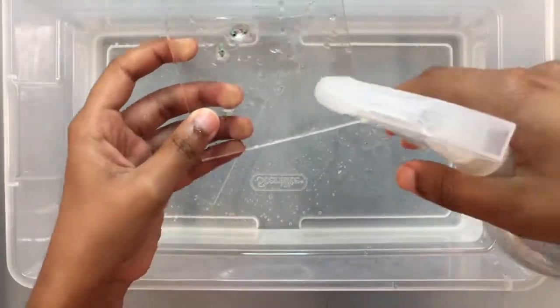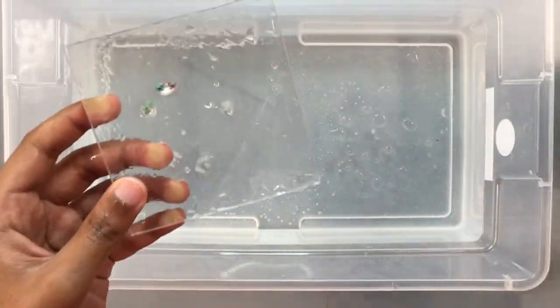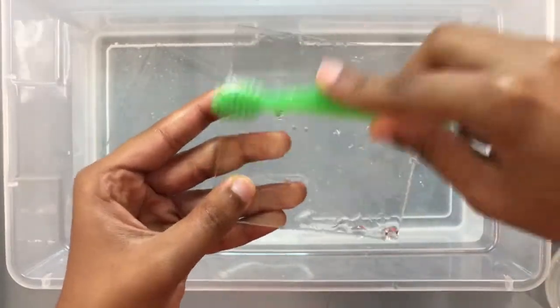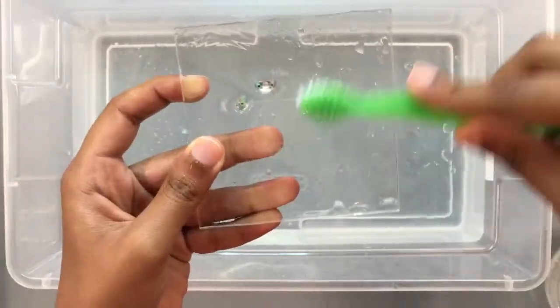Spray rubbing alcohol onto the polycarbonate and gently scrub the surface using a toothbrush. Repeat until all primitives are clean.